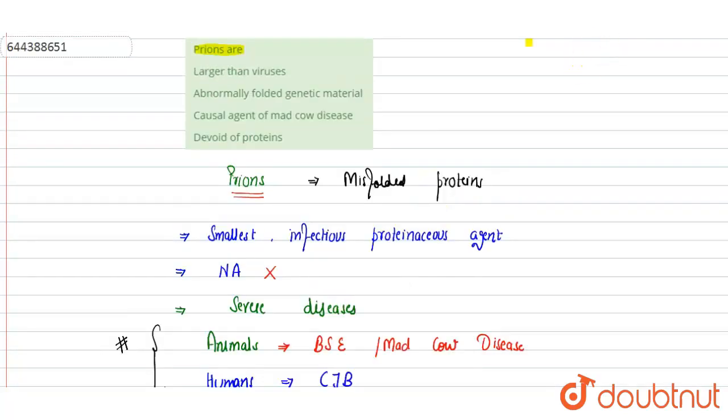So if you will see the options one by one, first one is prions are larger than viruses - this is wrong, these are not larger than viruses. Abnormally folded genetic material - this is incorrect because it is abnormally folded proteins.